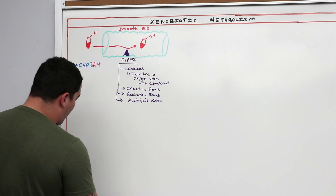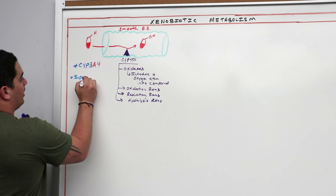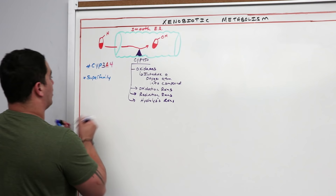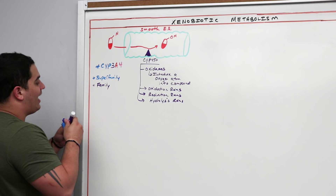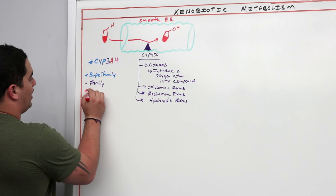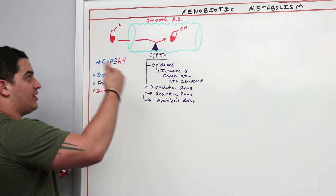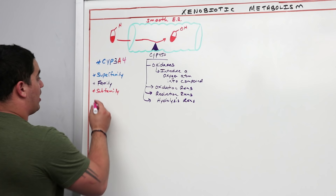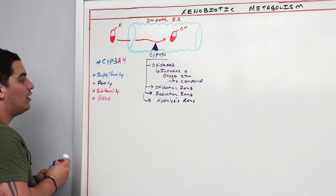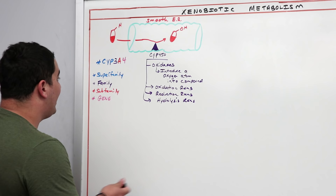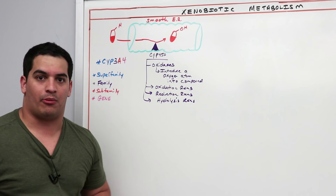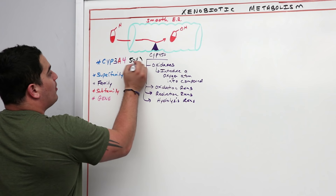So CYP stands for superfamily, three is the family, A is the subfamily, and four is the gene. That gene leads to transcription of a particular mRNA that is translated to a protein functioning in this metabolic process — that is the particular isozyme. CYP3A4 is important because it controls the metabolism of approximately 50% of all available drugs on the market.